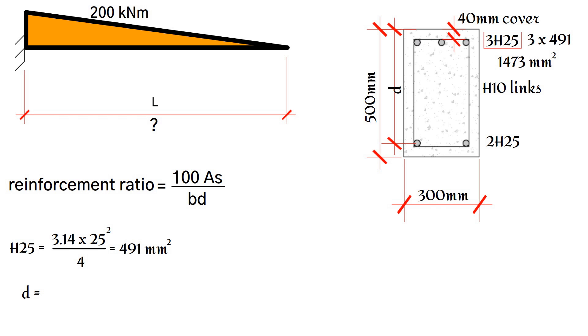The effective depth d is equal to the depth of the beam, 500mm, minus the cover, 40mm, minus the link size, 10mm, minus half of the bar size, 25mm divided by 2. This results in a value of 437.5mm.